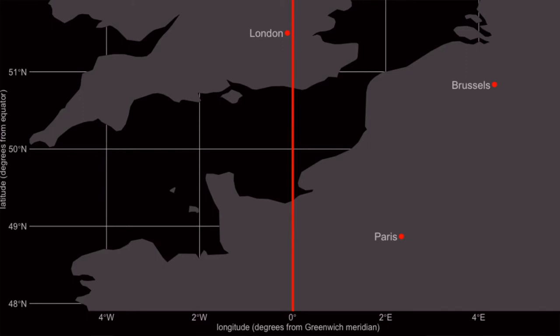The equator makes sense as a reference point because it's halfway between the north and the south pole. The Greenwich meridian is completely arbitrary as a reference point, but it's widely accepted. So when you see coordinates expressed as longitude and latitude, you can assume that's relative to the equator and to the Greenwich meridian.